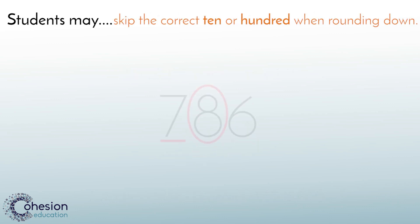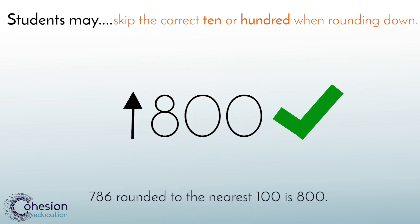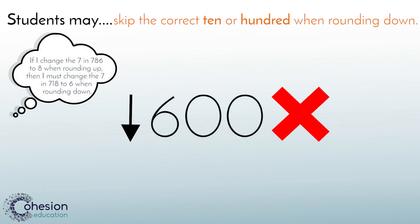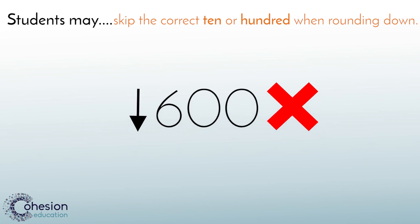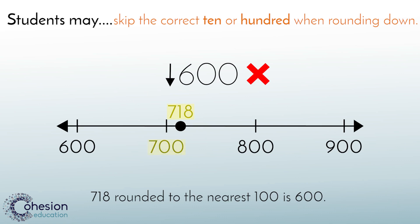Another possible error students might make is when rounding down, changing the digit to the wrong hundred. For example, rounding 786 to the nearest hundred would round up to 800. Students apply the same logic to rounding down — for example, when rounding 718, the student may incorrectly round down to 600. In this case, the number line is a useful resource for students to see that 718 is between 700 and 800. Therefore, you round down to 700, not to the next 100, which would be 600.